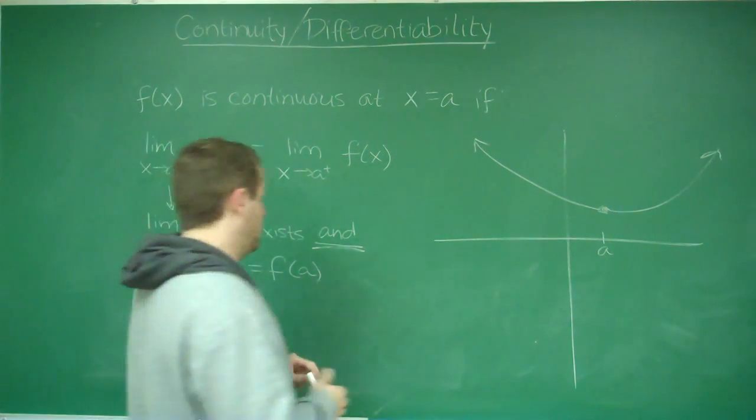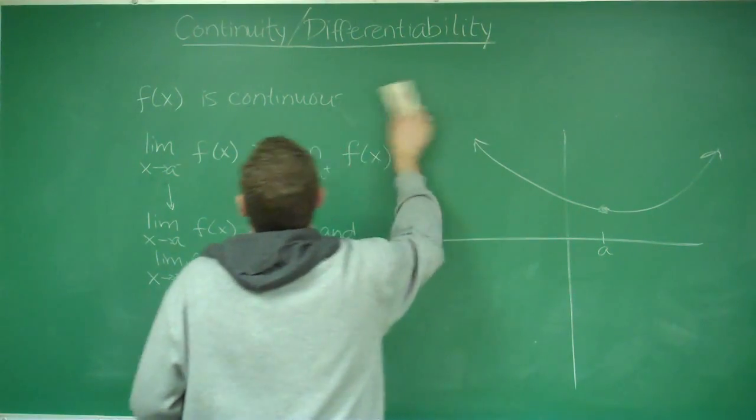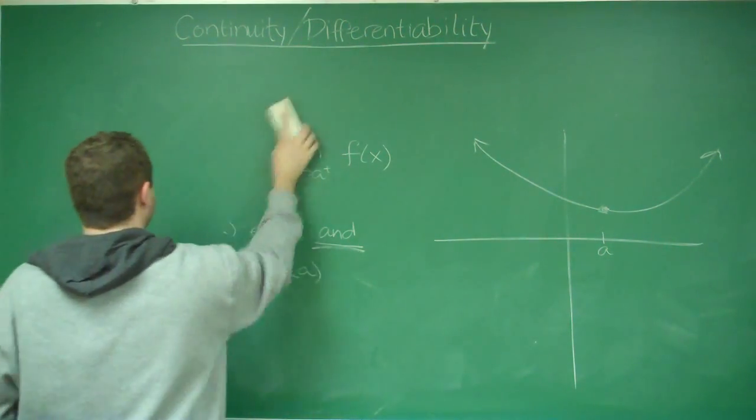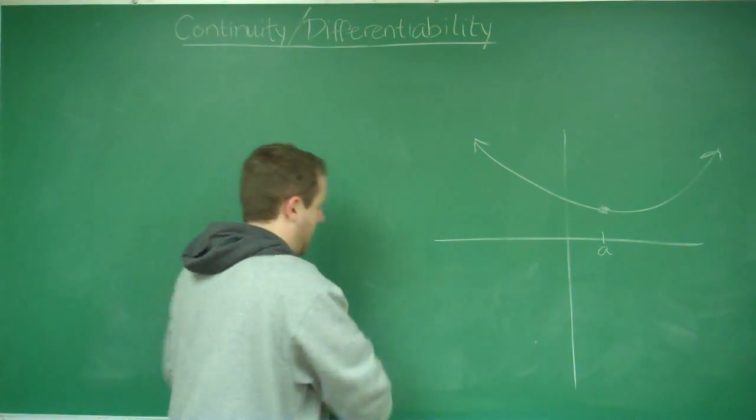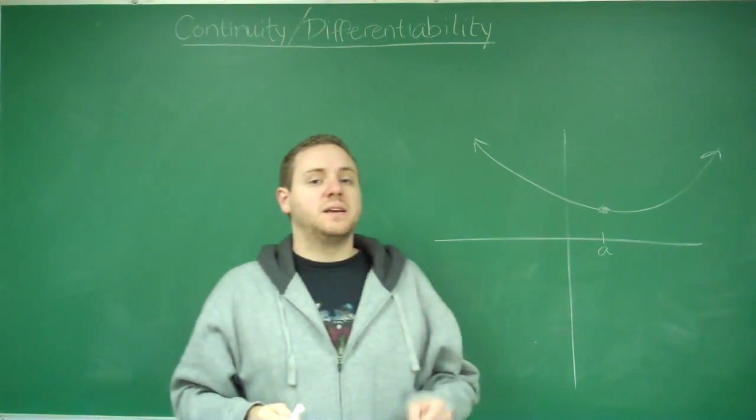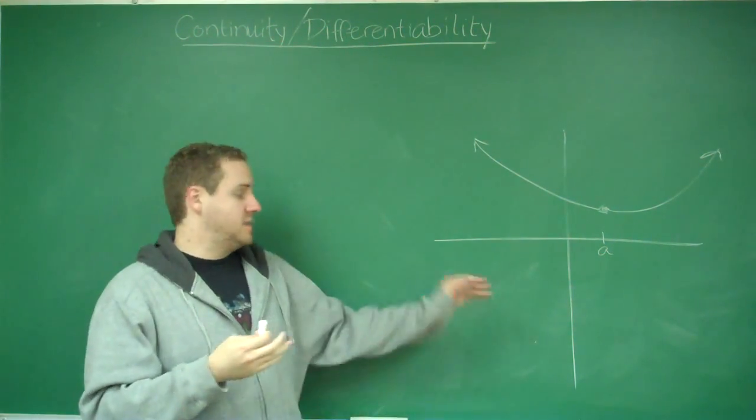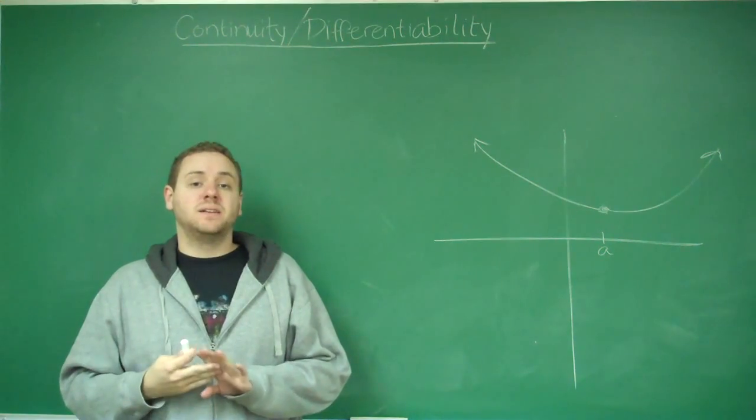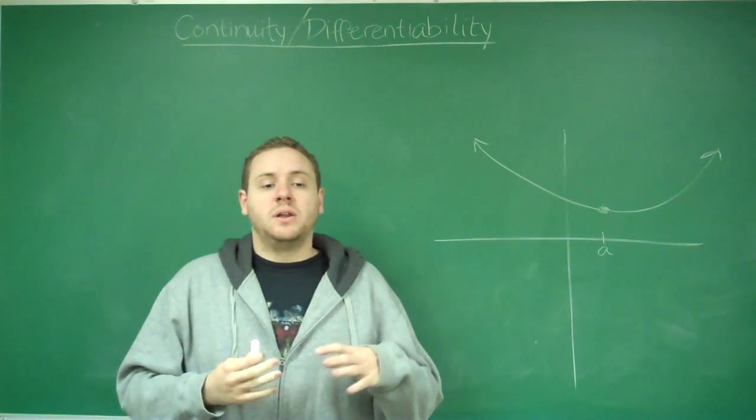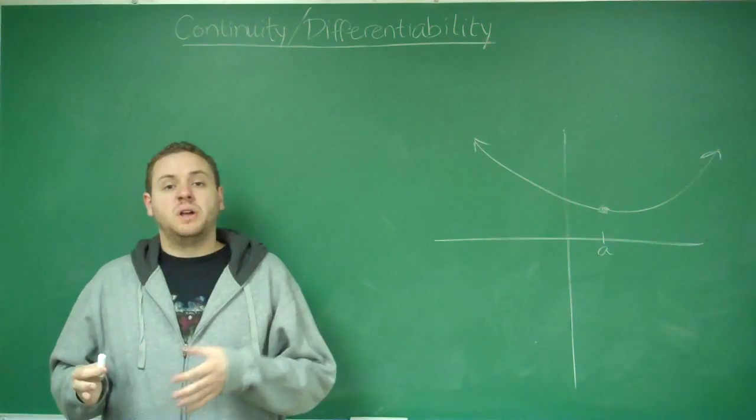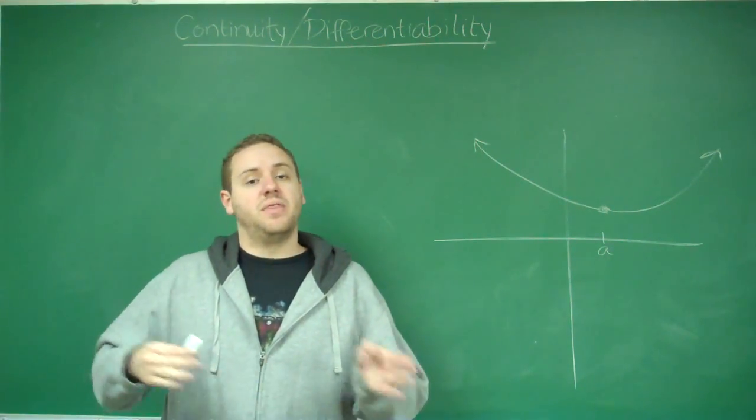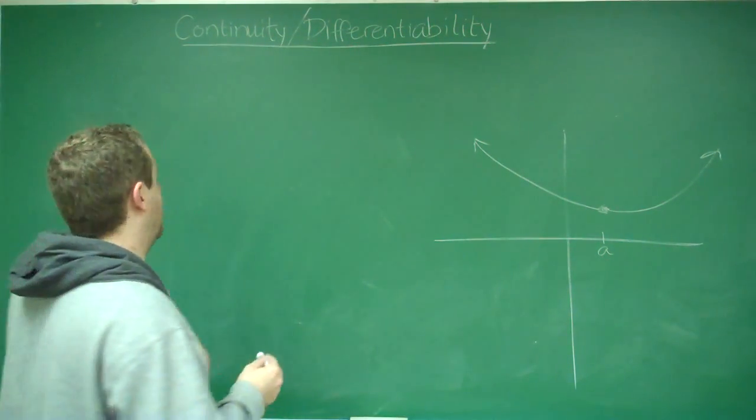So that's continuity. So let's get into differentiability. So one thing you can think about is that if a function is not continuous at some x equals a, it's automatically not differentiable there. So in order for a function to be differentiable, it first needs to be continuous and then we'll talk about what else needs to happen.